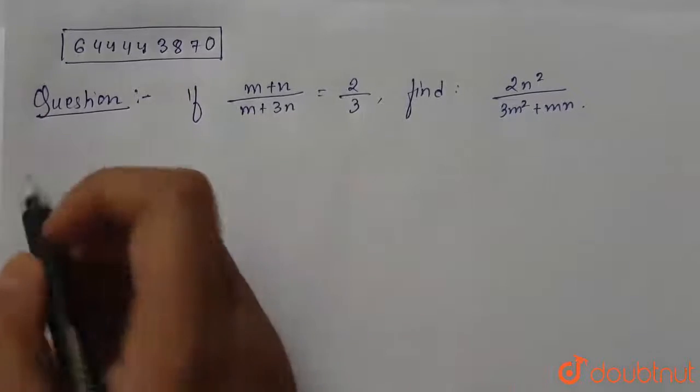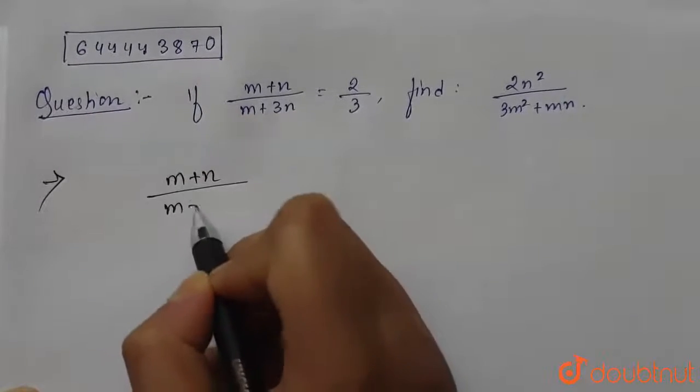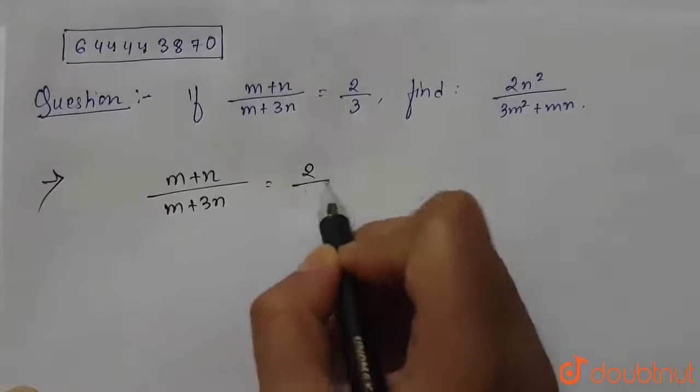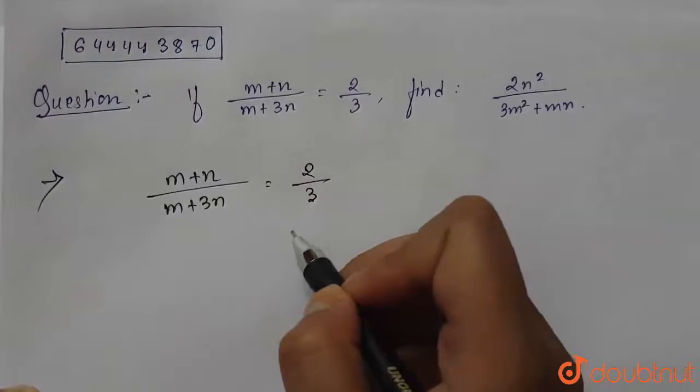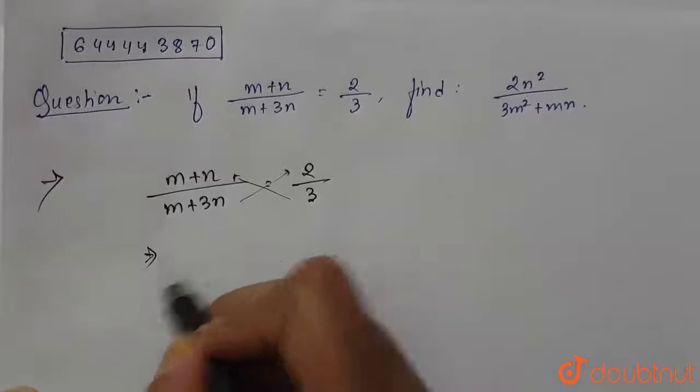Let's start with the solution. We are given m plus n divided by m plus 3n equals 2 by 3. So let's cross multiply. We can write this as 3 into m plus n equals 2 into m plus 3n.